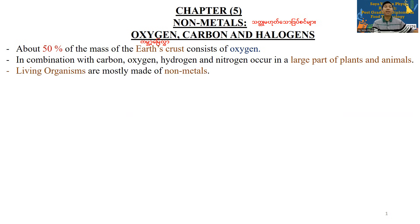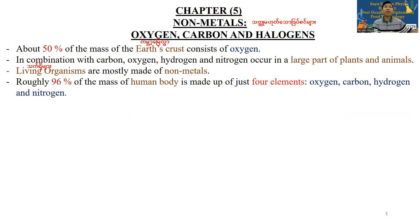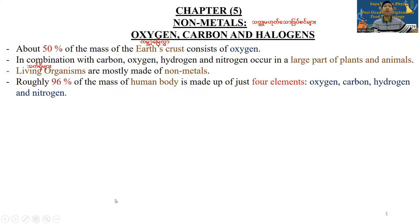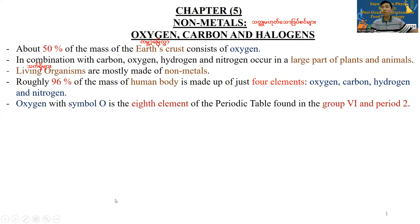Now we have to move on. Roughly, a giant part — 96% of the mass of the human body — is made of just four elements: carbon, hydrogen, nitrogen, and oxygen.